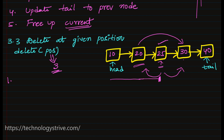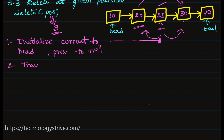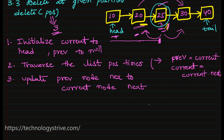Initialize two pointers: current to head and previous to null. Traverse the list position times — during traversal, set previous equal to current and current equal to current.next. After traversal, current is at the node to be deleted and previous is the node before it. Then update previous.next to current.next, effectively removing the current node from the linked list.